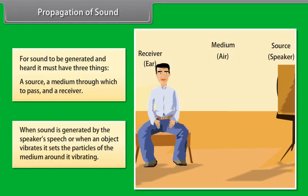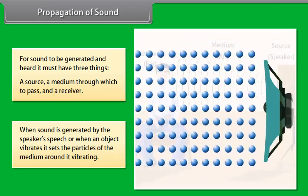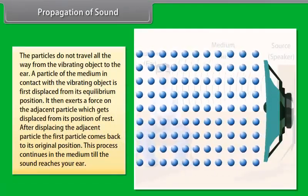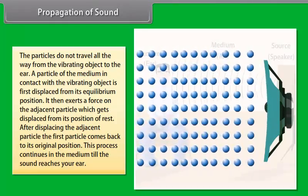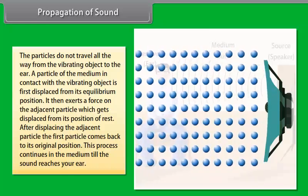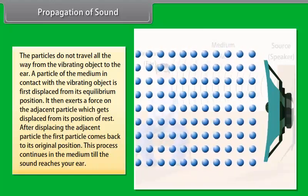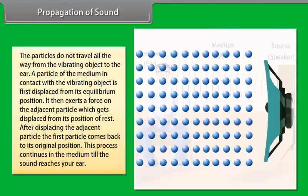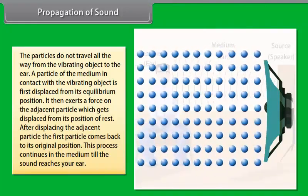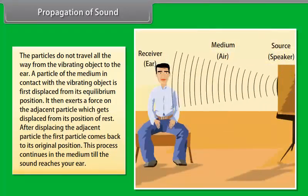When a sound is generated by the speaker's speech or when an object vibrates, it sets the particle of the medium around it vibrating. The particles do not travel all the way from the vibrating object to the ear. A particle of the medium in contact with the vibrating object is first displaced from its equilibrium position. It then exerts a force on the adjacent particle, which gets displaced from its position of rest. After displacing the adjacent particle, the first particle comes back to its original position. This process continues in the medium till the sound reaches your ear.